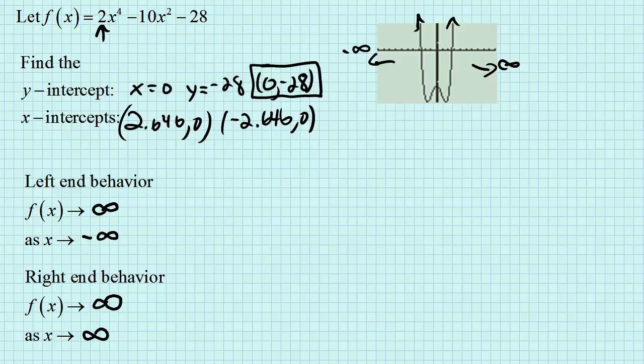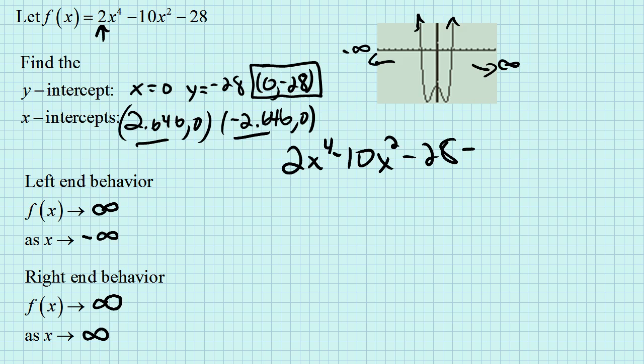We're left with trying to find these x-intercepts, these zeros, algebraically. So we're trying to find where the function equals zero, where 2x to the fourth minus 10x squared minus 28 equals zero.